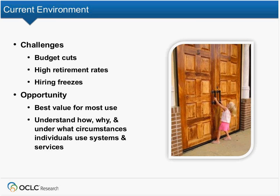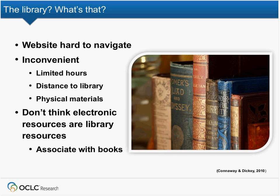I think right now we almost have to look for the best value for the most use. In order to do that, we need to understand how, why, and under what circumstances individuals use systems and services — internal and external ones. I always think of what Henry Kissinger said: a diamond is a chunk of coal being good under pressure. And I think that's where we are at this point.